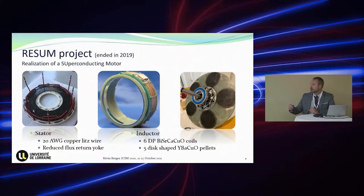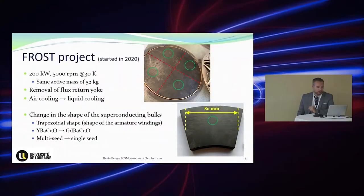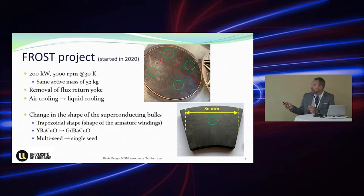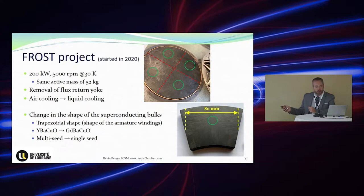Now there is a new project — a kind of update of the machine. We want to move to 200 kW for the same speed and same active mass. First, we removed the flux return yoke and changed from air cooling to liquid cooling. We also changed the bulk: we had some drawbacks with the multi-seeded bulk, whose performance is not the same as a single monodomain crystal, which reduced machine performance. So we switched to a single-grain YBCO bulk — a large one, almost 80 mm — and we machine it to obtain a trapezoidal shape that produces more power.